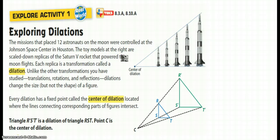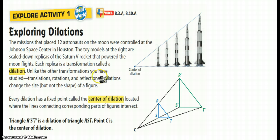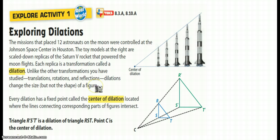As you know, according to the book, we have been studying other transformations, which is translation, rotation, and reflection. These are called rigid transformations, or as we said in the beginning of the study, isometries. The reason why is because the size doesn't change — no matter what happened with these three, it remains the same size. Dilation, on the other hand, is going to change the size, but it will not change the shape.